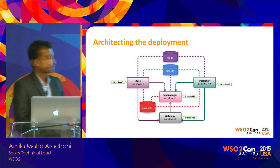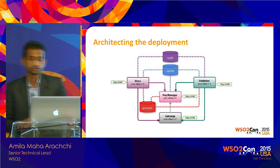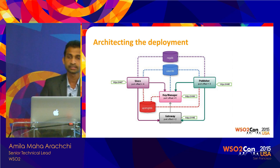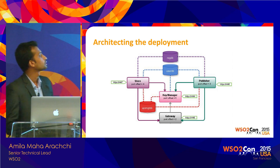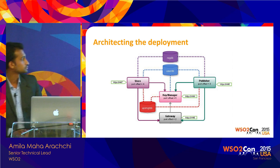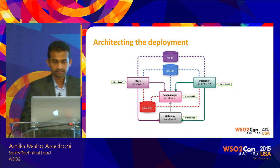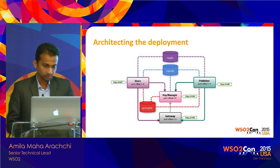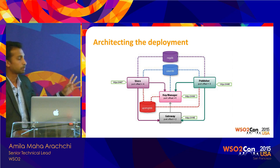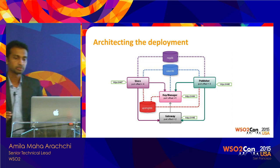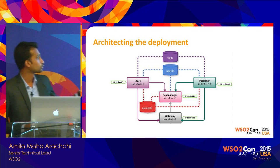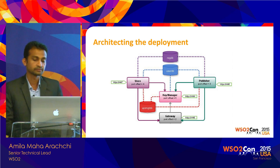First, I'll talk about architecting the deployment from beginning to end. Here is a deployment diagram I found in our documentation — an API Manager deployment with a publisher, store, key manager, and gateway. This will work in the happy path very well: you'll be able to create APIs, publish APIs, subscribe, and invoke them. But if any one of these components goes down, your entire scenario will start falling apart.